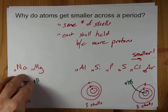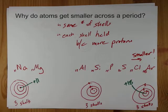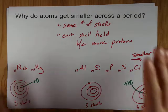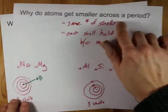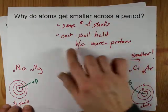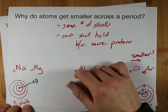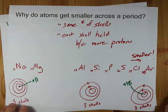you're actually taking away the third shell entirely, so this doesn't apply anymore. But for the atoms themselves, they get smaller across a period because you have the same number of shells and each shell is held closer because there are more protons.